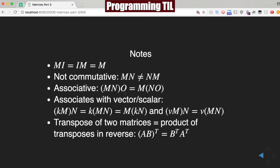It is associative, however, so if you multiply MN and then you multiply by O, that is the same thing as multiplying by M, which has already been multiplied by NO. It also associates with vectors and scalars as well, so the same thing as above, but with scalars and with vectors.